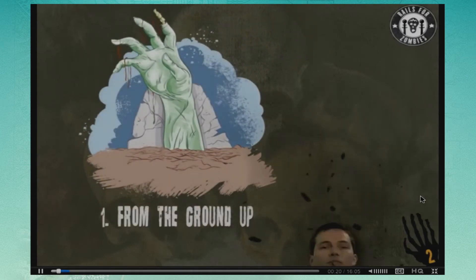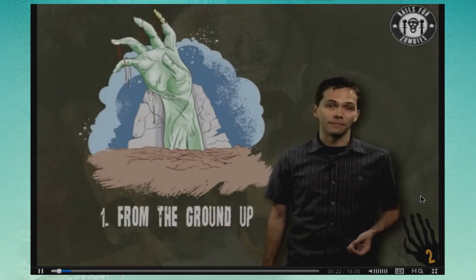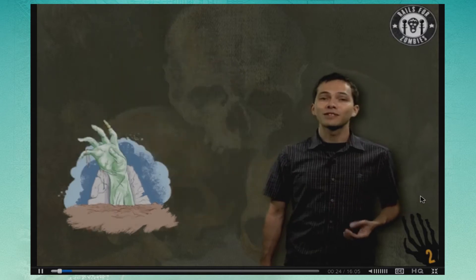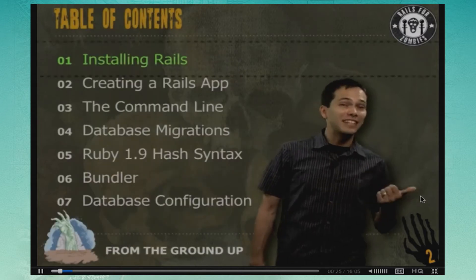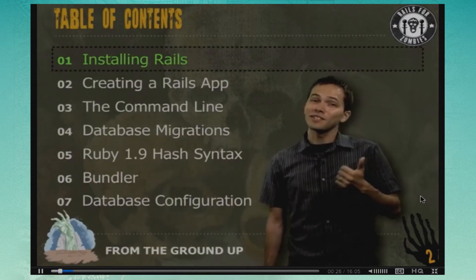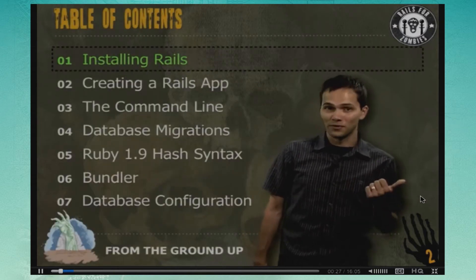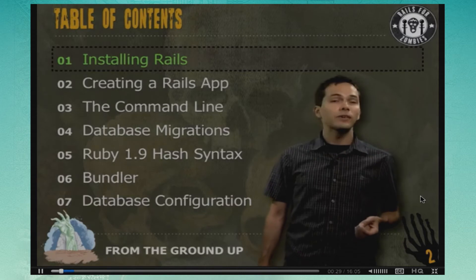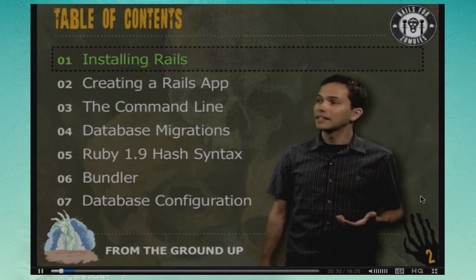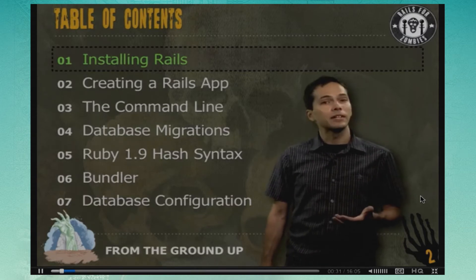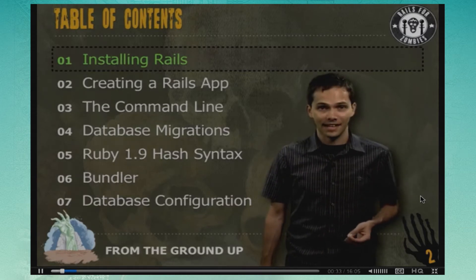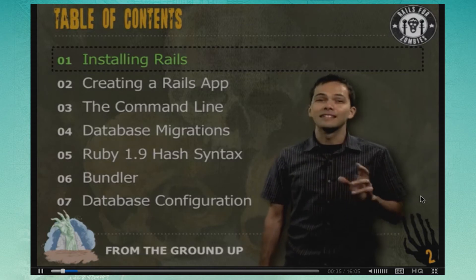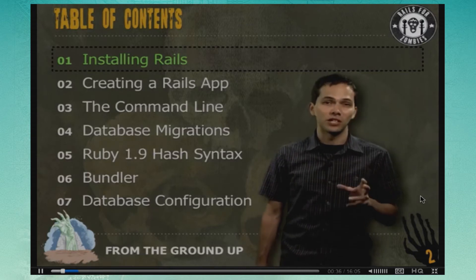Welcome to Rails for Zombies 2, Level One. In this episode we're going to cover things we left out in the first set of videos, including creating a Rails app, the command line, database migrations, the Ruby 1.9 hash syntax, as well as a little bit of Bundler and database configuration.